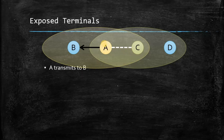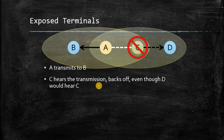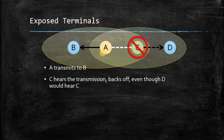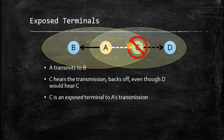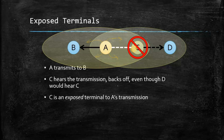Now, A transmits data to B. Since it is a wireless medium, A sends data without knowing the exact position, so the data travels in every direction — it goes to C as well. C checks whether the transmission medium is free or not. C is exposed to terminal A's transmission, so it senses that A is transmitting data to B.